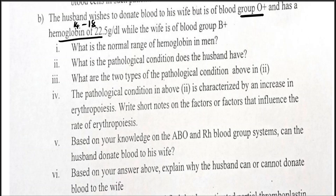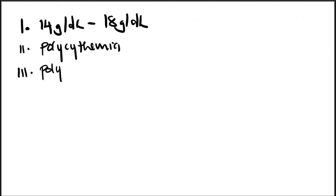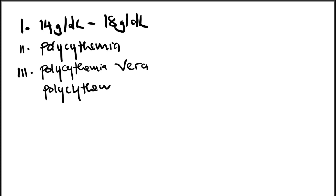The two types of polycythemia are polycythemia vera and polycythemia rubra — also referred to as primary polycythemia and secondary polycythemia.